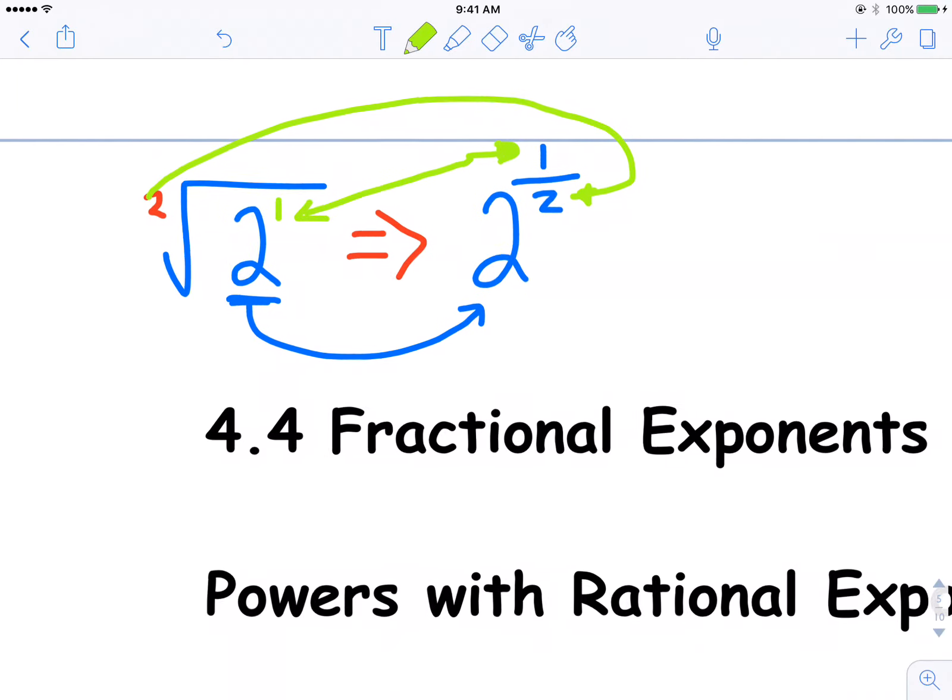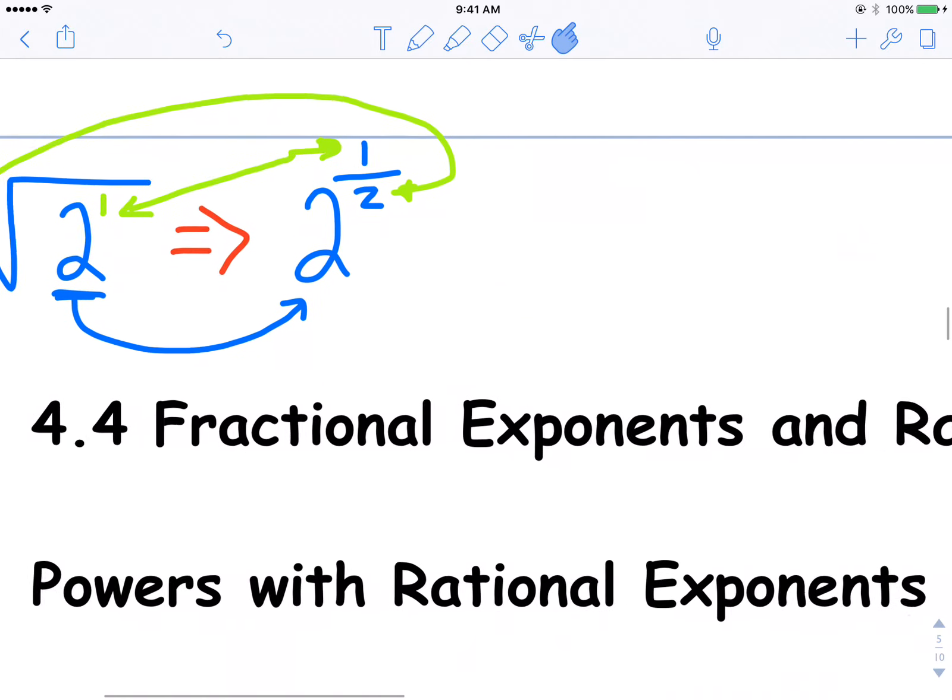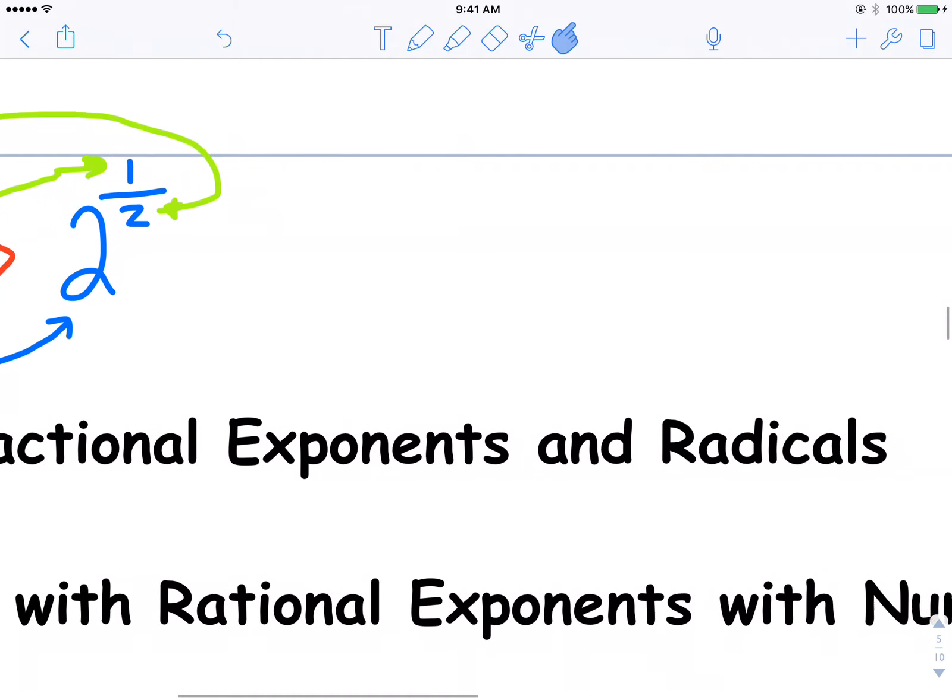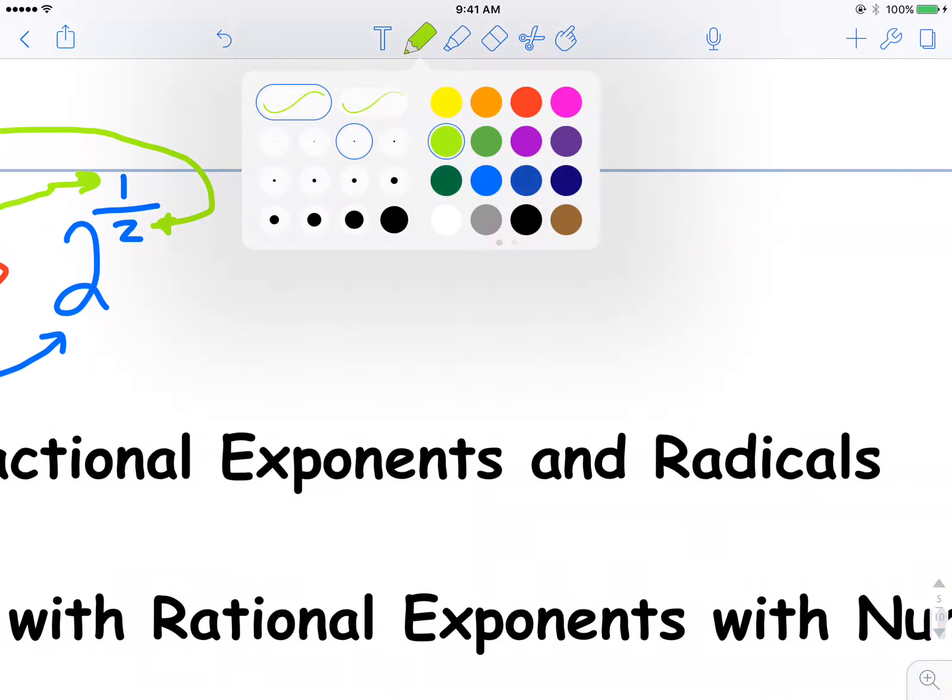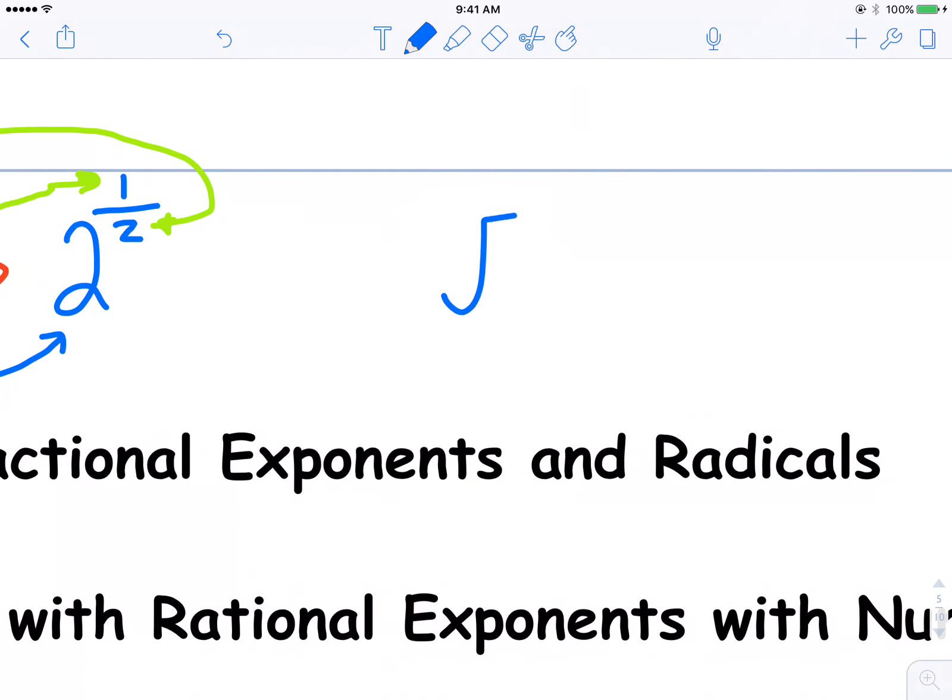So if we extend that idea a little bit, I could then give you this example. The square root of 3 as a fraction would be 3 to the power of 1 over 2. 2 coming from the square root. 1 coming from the power on the 3 that we never write.